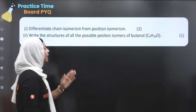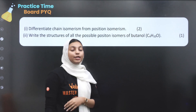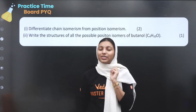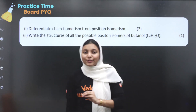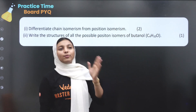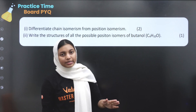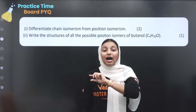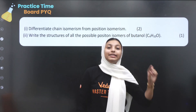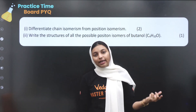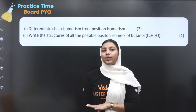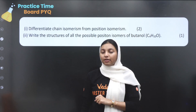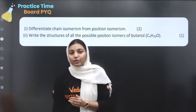Next question: differentiate chain isomerism and position isomerism. Again, a two-mark question. Chain isomerism and position isomerism are differences in our career. Carbon skeletal difference is what we call chain isomerism.